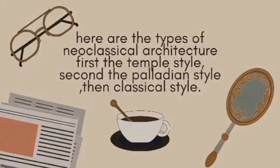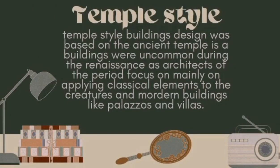Here are the types of neoclassical architecture. First, the temple style. Second, the Palladian style. Then, classical block style. Temple style buildings' design was based on the ancient temple, as buildings in this style were uncommon during the Renaissance, as architects of the period focused mainly on applying classical elements to modern building types like palazzos and villas.